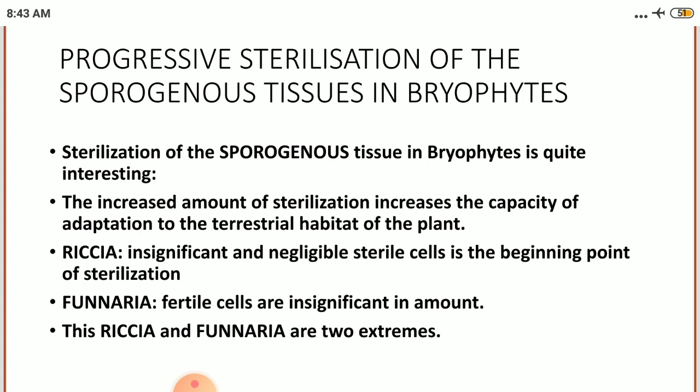Coming to Sphaerocarpus, the nurse cells are well established. In Targonia, half of the sporogonium cells get converted into spores and the rest half into elators, which are the sterile cells. The course of evolution passing through them reaches to Marchantia.